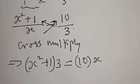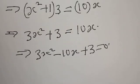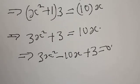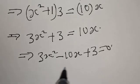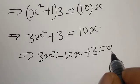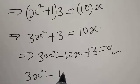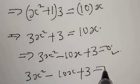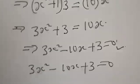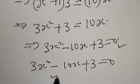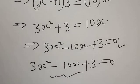Now let's open the bracket. When you open the bracket we have 3x squared plus 3 is equal to 10x. This implies we have 3x squared minus 10x plus 3 is equal to 0. This is a quadratic equation. Now let's solve by the factorization method.